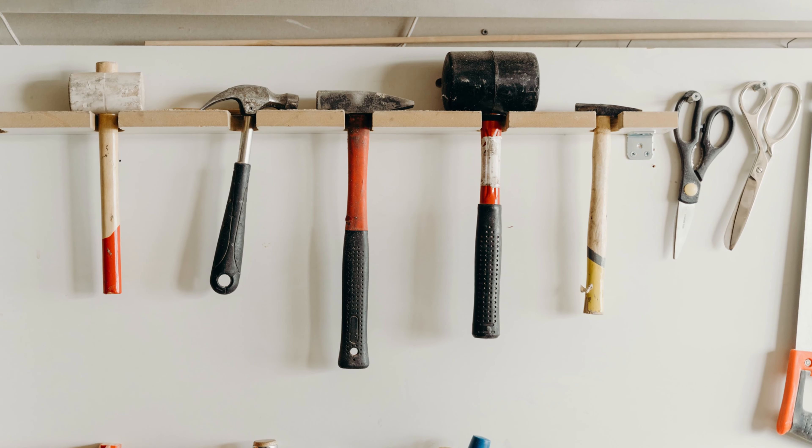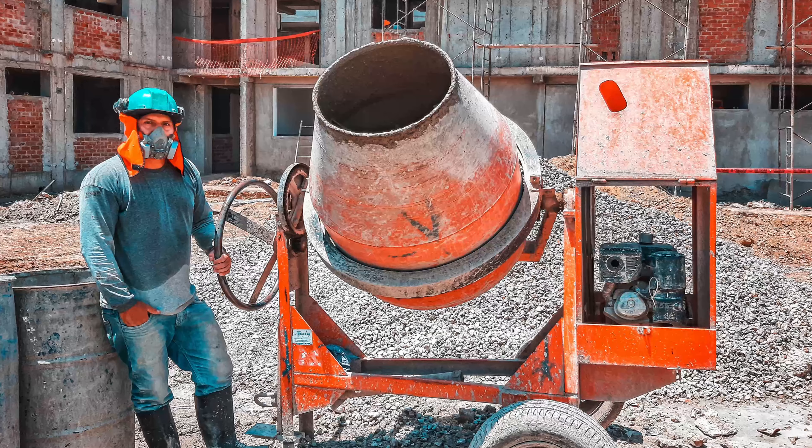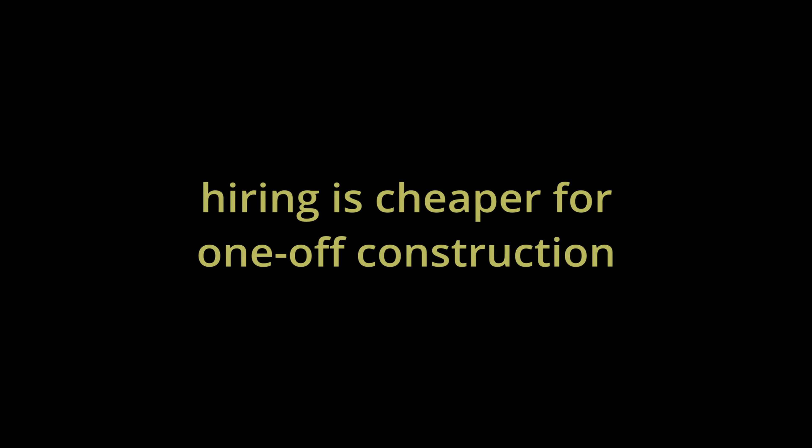Tip number four, which also relates to tip number three, is to consider hiring equipment and tools which aren't essential for ongoing use in the construction. Things like hammers, wheelbarrows, and even mixers — why not consider hiring them? People often go out and purchase each and every piece of equipment, yet they can hire these for just a few days at a far cheaper rate. By renting these different pieces of equipment and tools, you won't incur the full cost of purchasing them, which can be more than three or four times the cost of renting, and through that you'll save a lot in this construction.